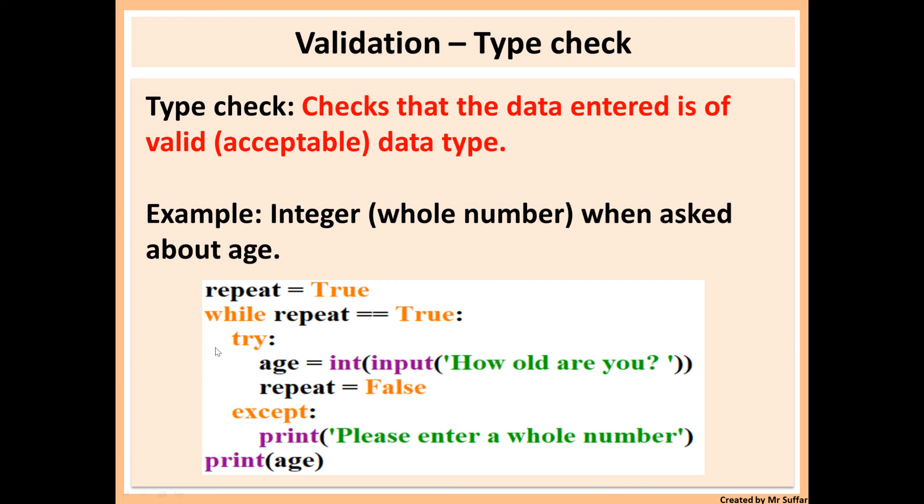However, if the program does crash, then it will go right to except. Rather than the whole program crashing, instead of going to repeat equals false, it will jump all the way to except. Then it will display please enter a whole number. Then the whole process will repeat. It will go back to the start of the loop while repeat is equal to true. It will try again with age equals int input. It will ask for age. If the age is correct, it will set repeat false. If the age is incorrect, it will go to except and display that message. It will keep doing it until the user enters the correct age.